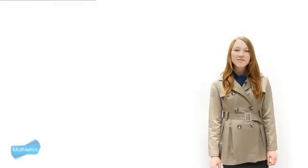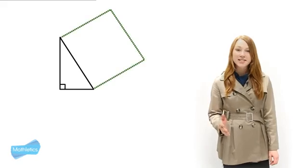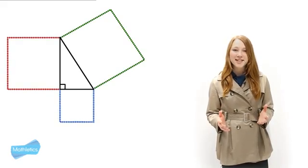It turns out that for every right angled triangle the square of the length of the longest side is equal to the sum of the squares of the two shorter sides.